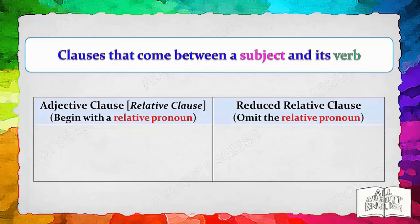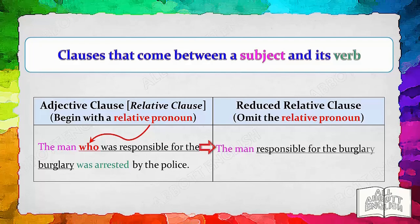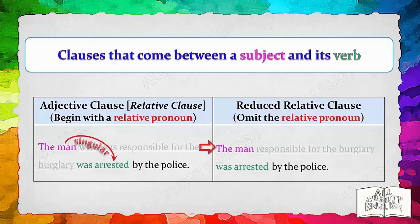Let's look at the adjective clause, or relative clause. 'The man who was responsible for the burglary was arrested by the police.' 'Who was responsible for the burglary' is an adjective clause beginning with the relative pronoun 'who.' The relative clause can be reduced by removing the relative pronoun. By mentally removing the clause, it is easier to match the subject with its verb: 'The man was arrested by the police.' Notice there are no commas in these sentences because the clause provides essential information — without it, we have no idea which man was arrested.